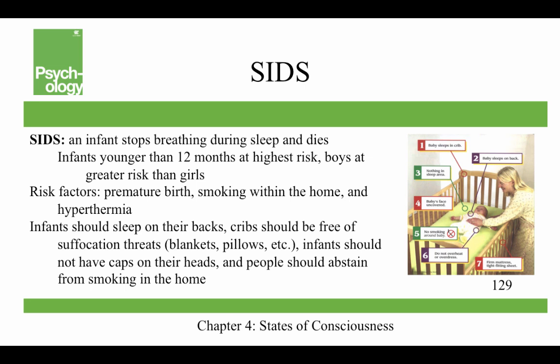SIDS, or sudden infant death syndrome, is when an infant stops breathing during sleep and dies. Individuals younger than 12 months are at the highest risk, and boys are at greater risk than girls. There may also be differences in brain structure for children who die from SIDS. Risk factors include premature birth, smoking within the home, and hypothermia. Infants should sleep on their backs, their cribs should be free of suffocation threats like blankets and pillows, they should not have caps on their heads, and people should abstain from smoking in the home. Recommendations like these have saved lives by reducing the number of SIDS deaths.